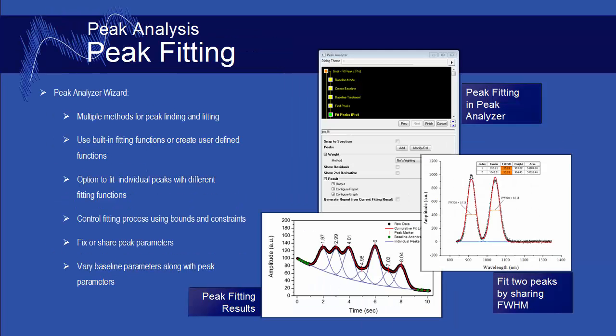The Peak Analyzer Wizard in Origin Pro provides several enhanced features for performing peak fitting, including multiple methods to detect peaks, the ability to fit different peaks in the same dataset with different functions, full control of the fitting process using bounds and constraints, the ability to fix or share parameters, and the ability to vary baseline parameters as part of the final fitting process. Over 25 different peak functions are built into the software, and you can also create your own peak functions.